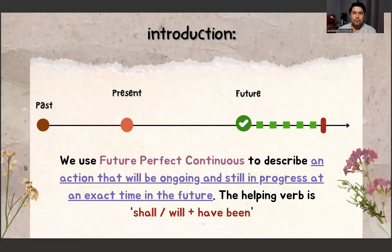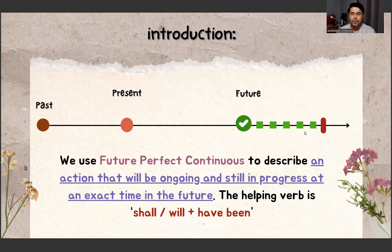For an introduction, here is a timeline showing past simple, present simple, and future simple. Today we will talk about the future period of time. Let's start — we use Future Perfect Continuous to describe